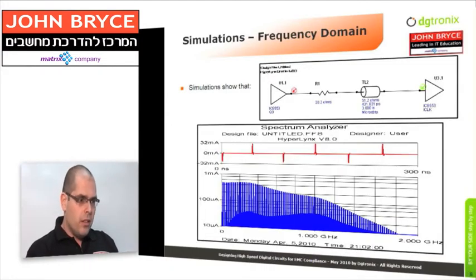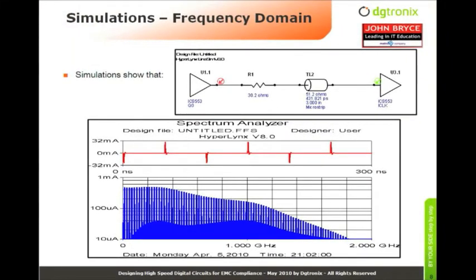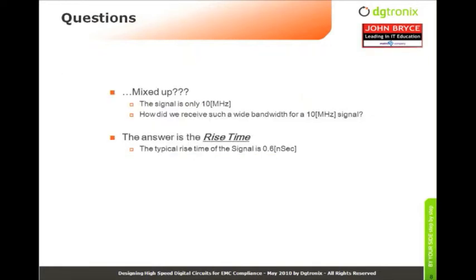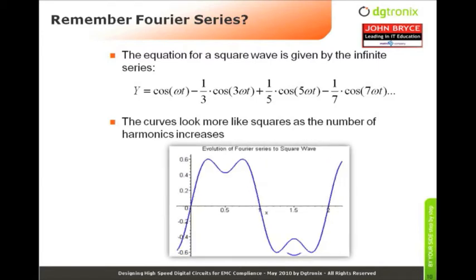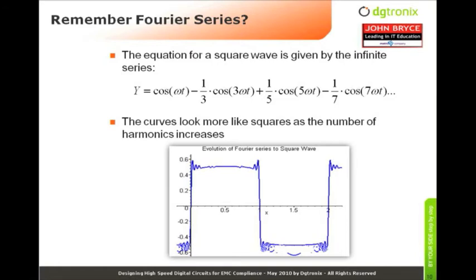But if we look at this signal in the frequency domain, we see a different picture. The bandwidth of the signal exceeds 1 gigahertz. To understand why, we look at the rise time of 0.8 nanoseconds of the output buffer. Going back to the mathematics of Fourier series, the equation for creating a square wave is given by an infinite series, and the more harmonic components we include, the more the signal looks like a square wave.